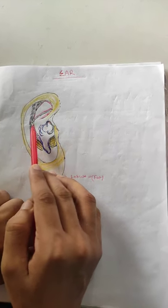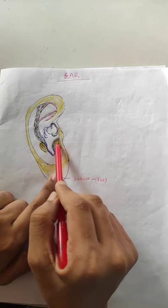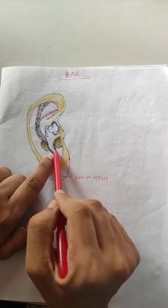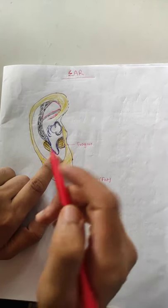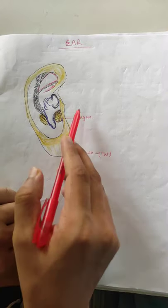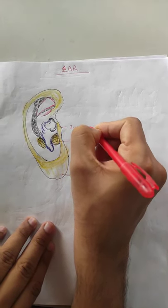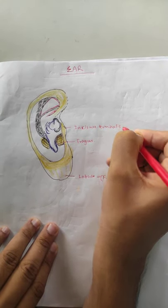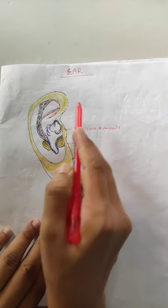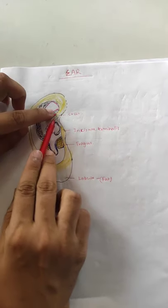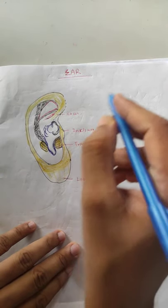In the pinna, there are many elevations and depressions. The elevated cartilaginous part at the front is called the Tragus. The gap between the Tragus and the Helix is called the Incisura Terminalis, also written as C-R-U-S.